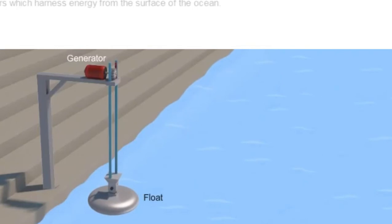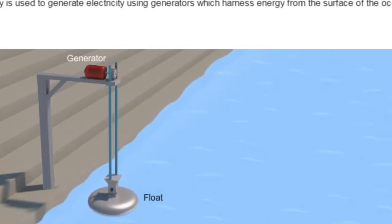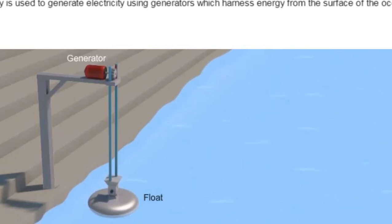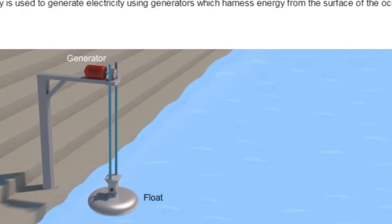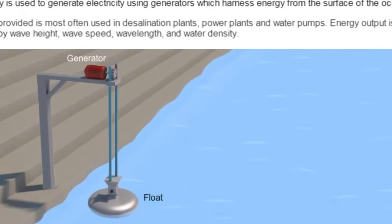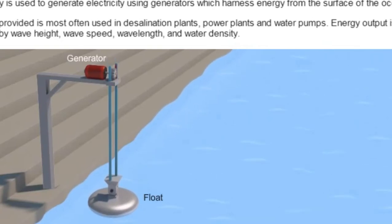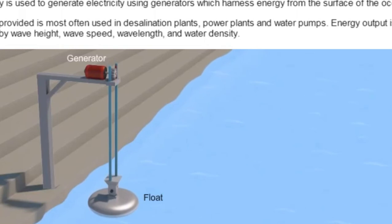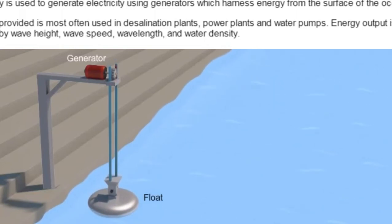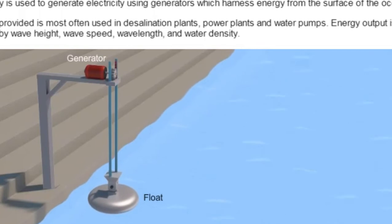Wave energy is used to generate electricity using generators which harness energy from the surface of the ocean. The energy provided is most often used in desalination plants, power plants, and water pumps. Energy output is determined by wave height, wave speed, wavelength, and water density.